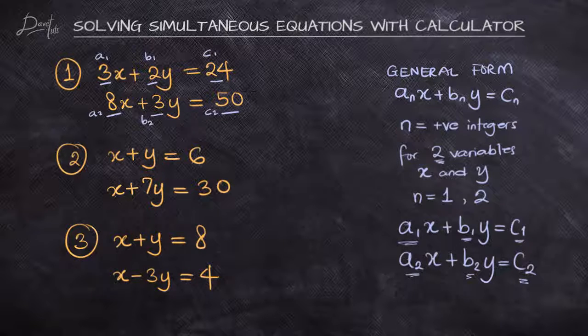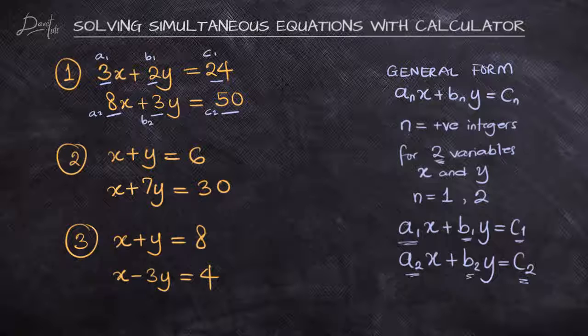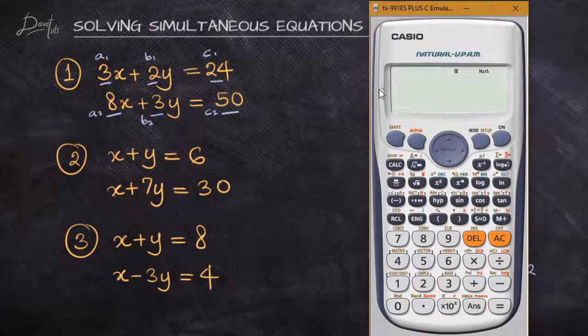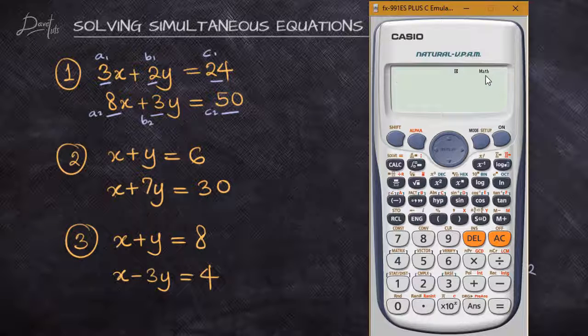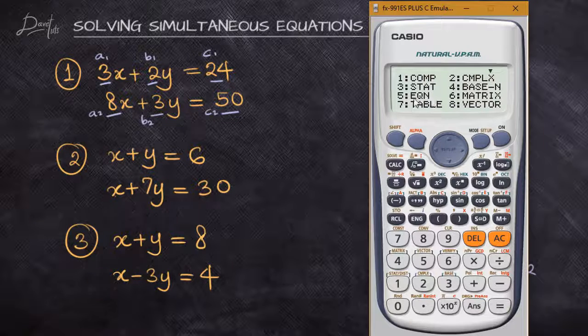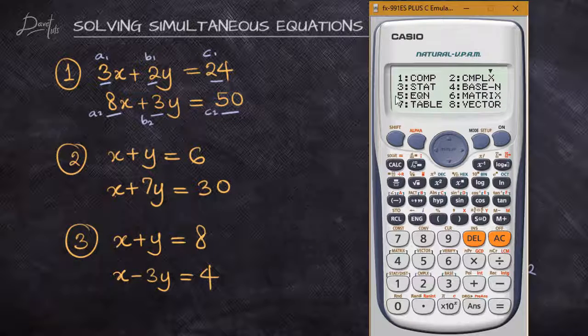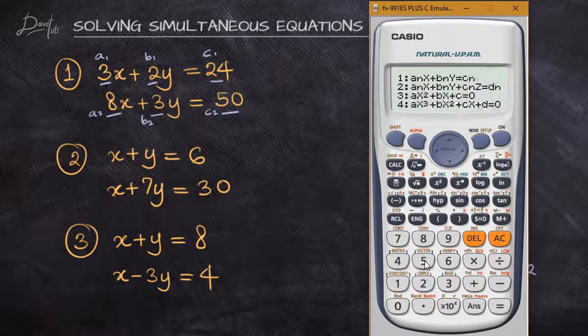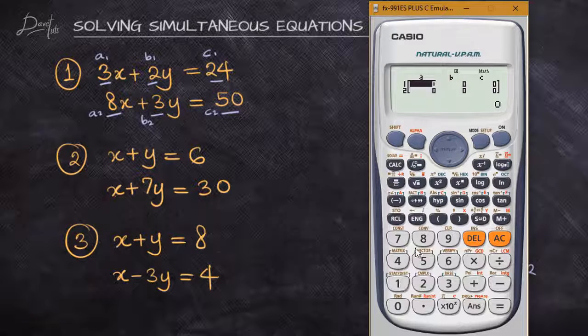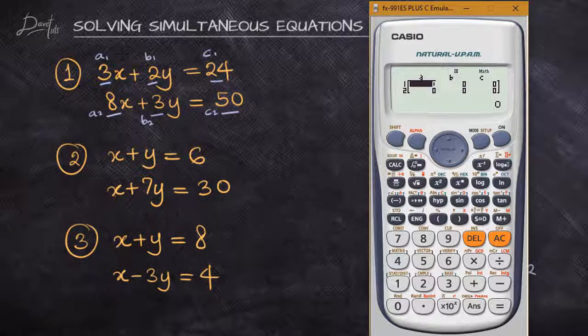These are the parameters we need to input into our scientific calculator to easily solve this question. Bring up the calculator. We're in normal calculation mode, but we need to go to equation mode. Press MODE. Equation is denoted as 5, so press 5. The very first format corresponds to our type of equation, so press 1. Here we have rows and columns set up for us to input our values.